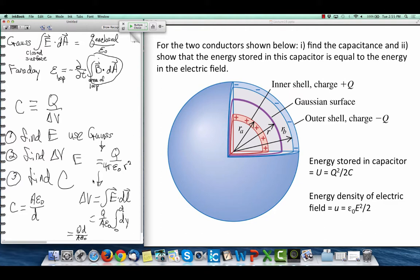How do I get delta V? I integrate E dot dL. What path do I use? I always want to use a path that is parallel to the electric field. The electric field is radial, so I want to integrate dR.